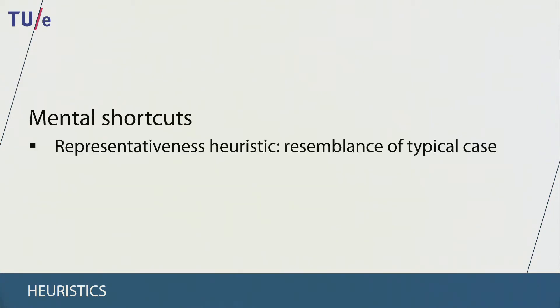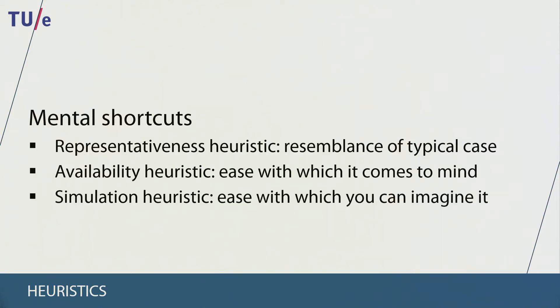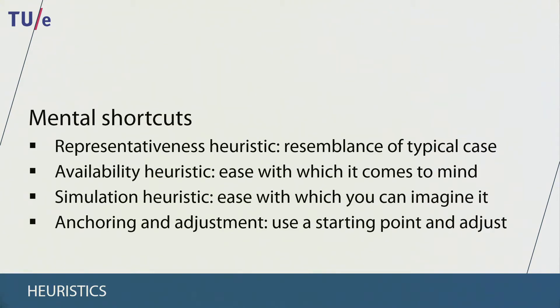Heuristics are mental shortcuts that we use for making decisions. The representativeness heuristic states that our attribution of a behavior depends on a resemblance to a typical case — we tend to use stereotypes to explain people's behavior because a stereotype describes a typical person from a group. The availability heuristic states that we attribute causes of behavior based on the ease with which that attribution comes to mind. The simulation heuristic states that we attribute a cause of behavior based on how easy it is to simulate it. Finally, the anchoring and adjustment heuristic states that we use a starting point in our attribution and adjust from there.